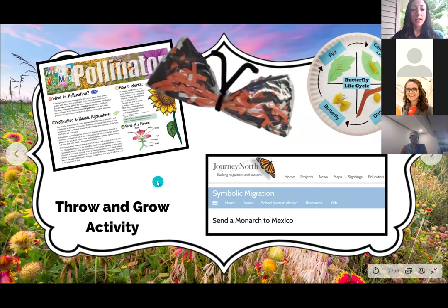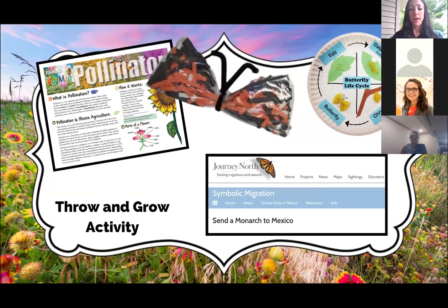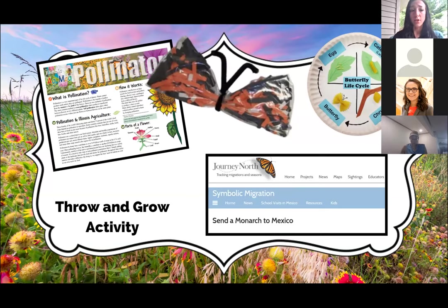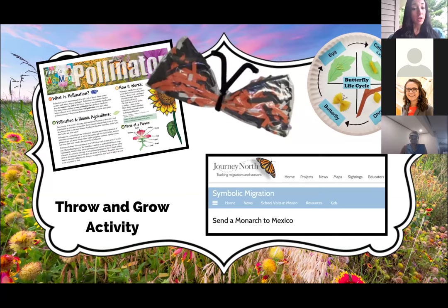The throw-and-grow activity is really great — you take a little modeling clay, push it into native flower seeds for your area, put it in soil, clump it, then throw it and it starts growing once it takes into the ground. That's a really fun way to increase pollinators in your area. If your school has an area for a school pollination garden or somewhere in your community, that would be a cool thing. A STEM activity could be where students are just designing a pollinator garden in your area.